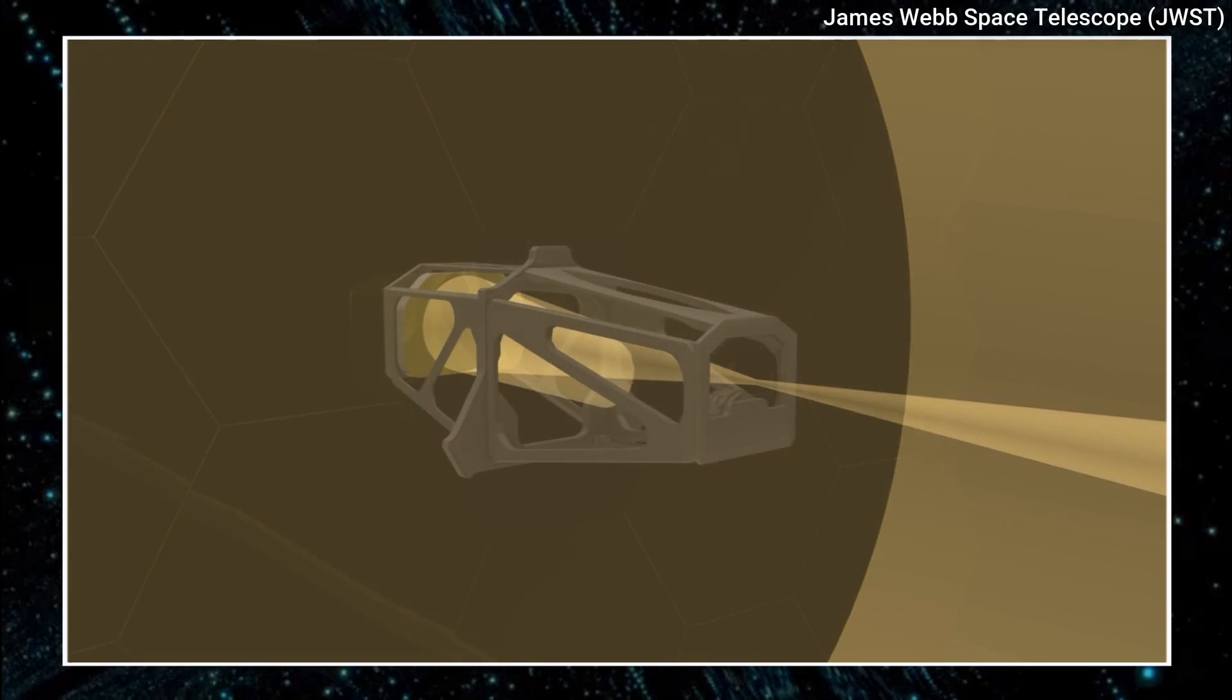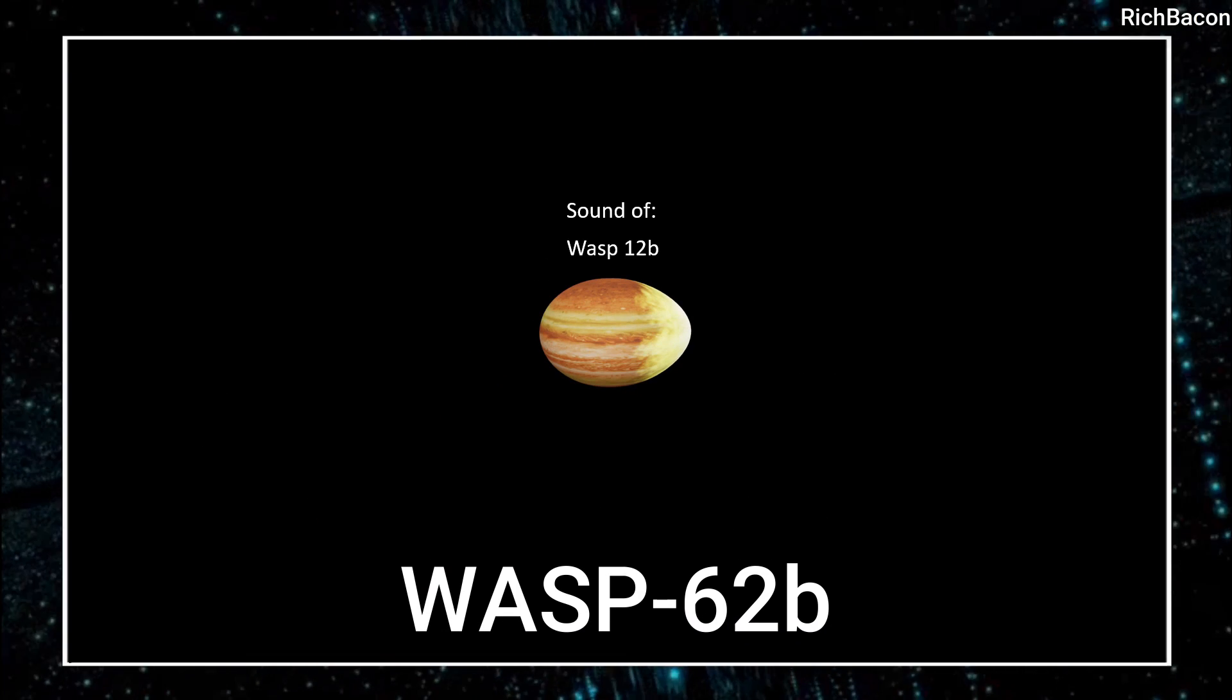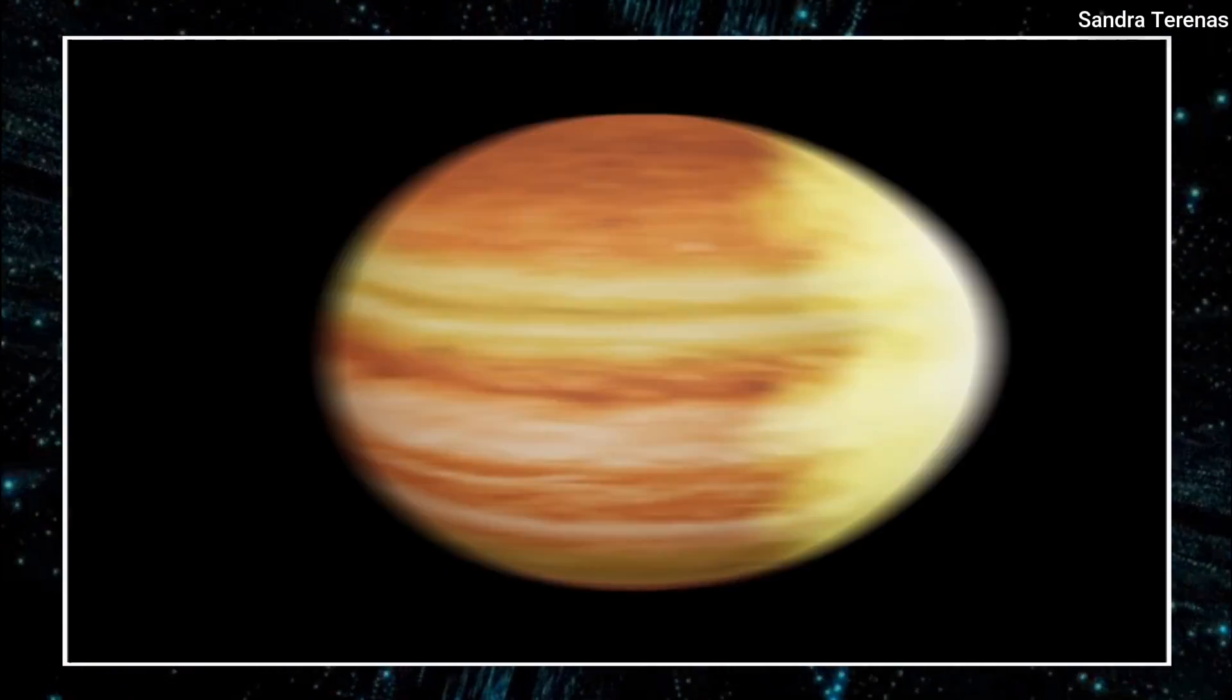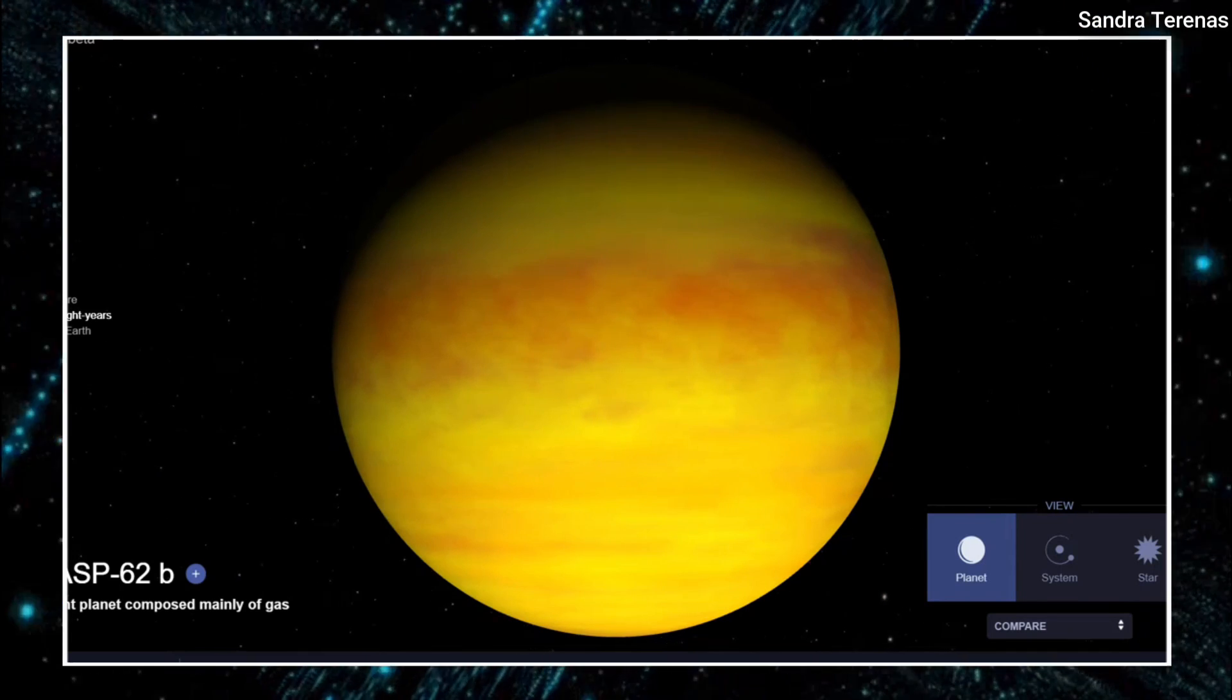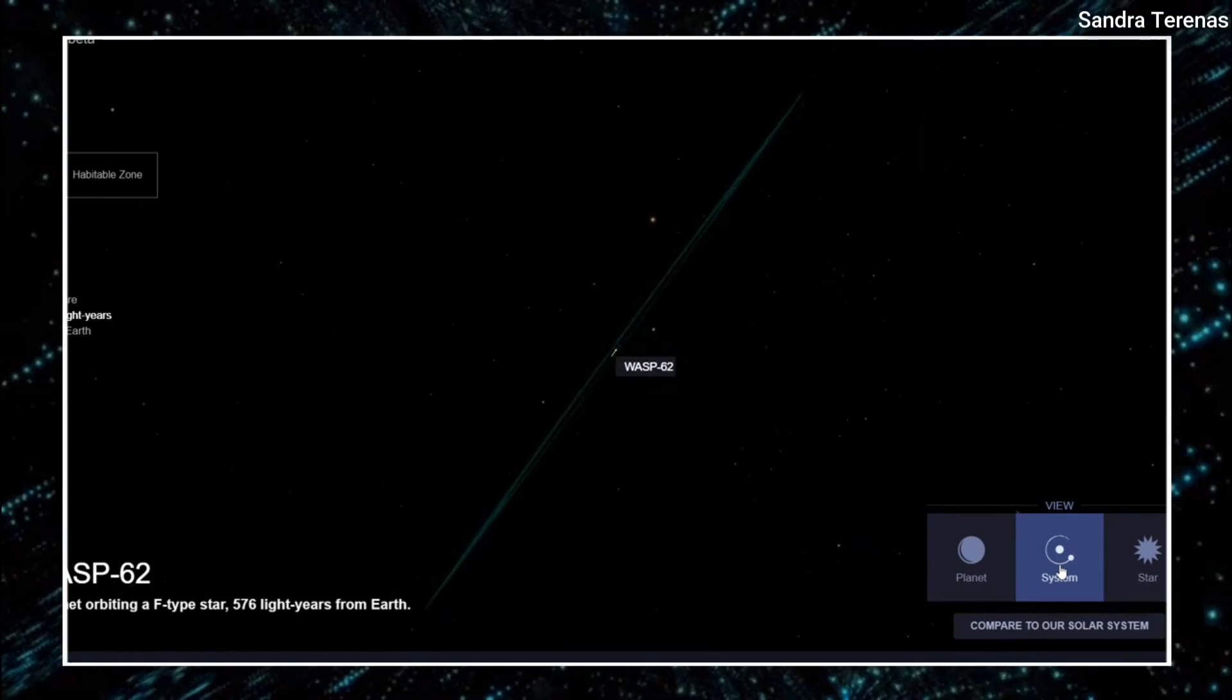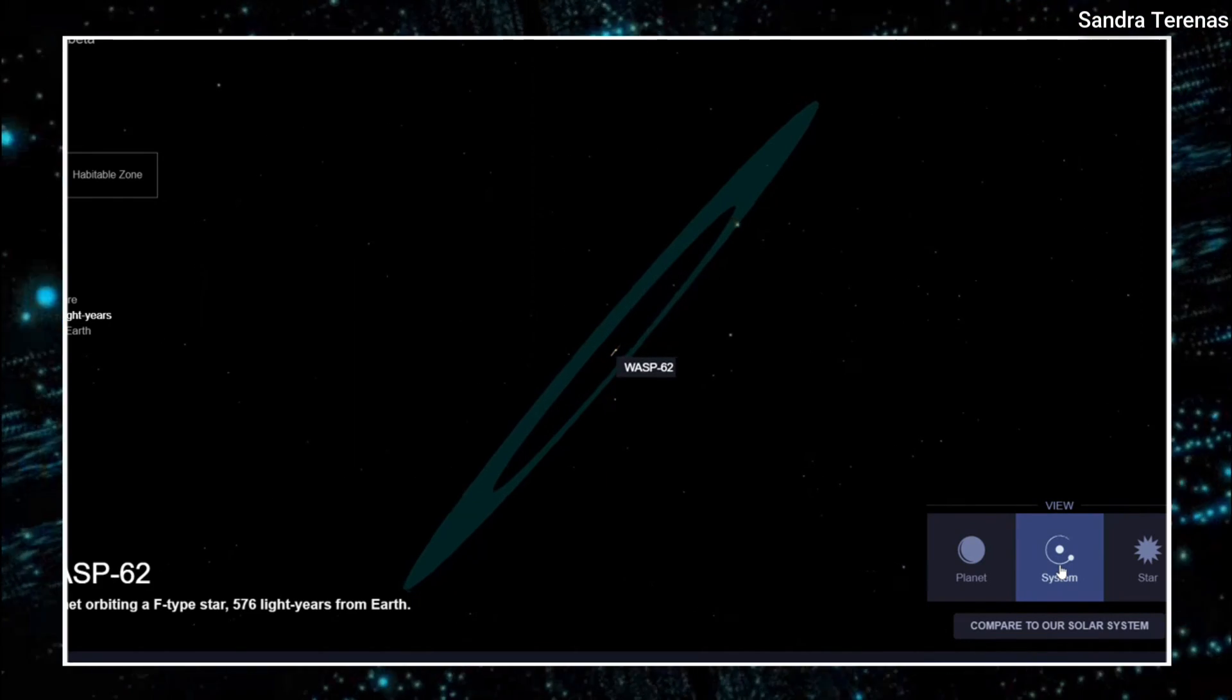WASP-62b is an exoplanet that orbits a star 600 light-years away from Earth. It's a gas giant like Jupiter, but it's much hotter and closer to its star. Webb's spectrograph instrument was used to analyze the light emitted by the planet as it passed in front of its star. Webb was able to identify various molecules in the planet's atmosphere, including carbon dioxide.